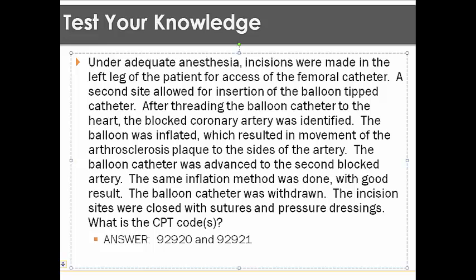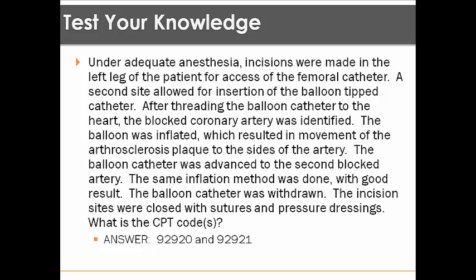There are two vessels that were treated, so the codes assigned are 92920 and 92921. Note that 92921 is an add-on code, therefore there is no need for modifier 51. Hopefully you got that right — that's the last scenario for this section, and we can go over more questions during our labs.